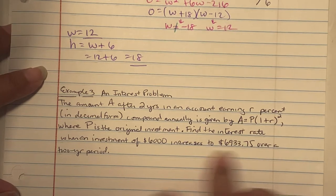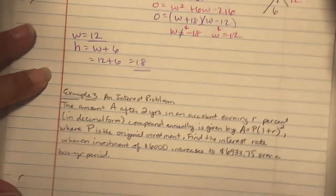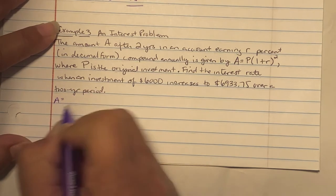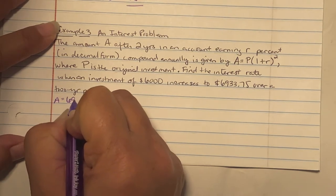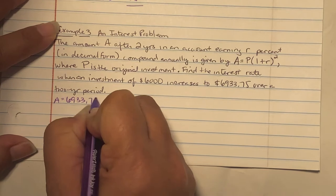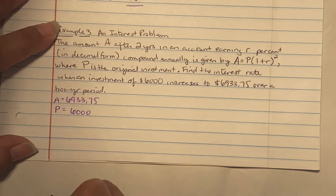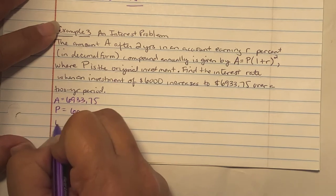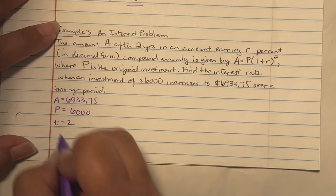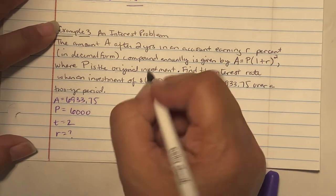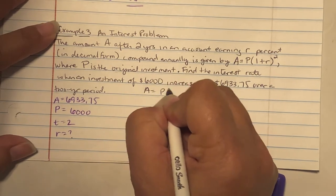For this problem, we know that A was $6,933.75. The P was our investment, that's $6,000. The time they told you was two years. R is what we don't know.